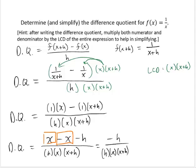Notice that there's a common factor of h in the numerator and denominator. Removing the common factor of h leaves a factor of 1 in the numerator, giving negative 1 over x times x plus h. And that's the simplified difference quotient for this function.